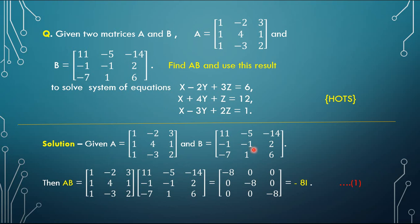So the question says A and B are two matrices — find AB. First we need to find AB and then use this result to solve the system of equations. Given A and B, we multiply to get the product matrix. You can take out minus 8, and you will be left with minus 8 into the identity matrix (1,0,0 / 0,1,0 / 0,0,1). So the product AB is equal to minus 8 times the identity matrix.